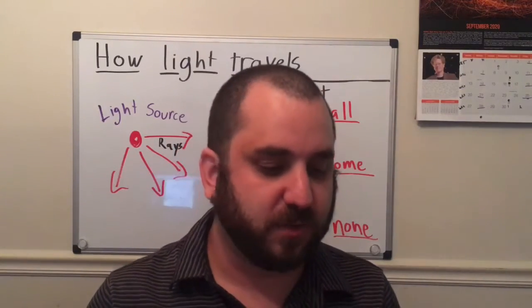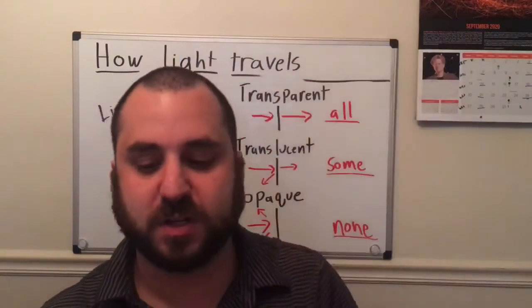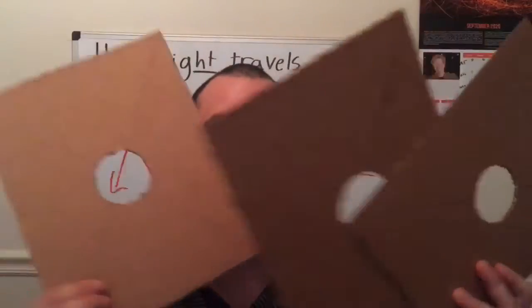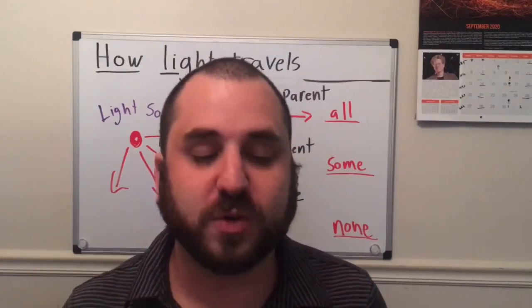So what I've done is I've got a few pieces of cardboard here. This piece of cardboard doesn't have any hole in it. These three pieces of cardboard do have holes in them and what we're going to do is set these up in a line.